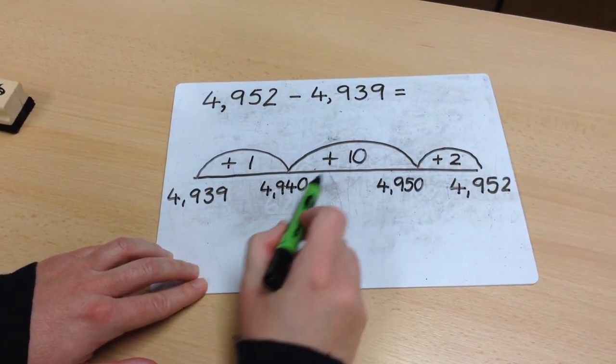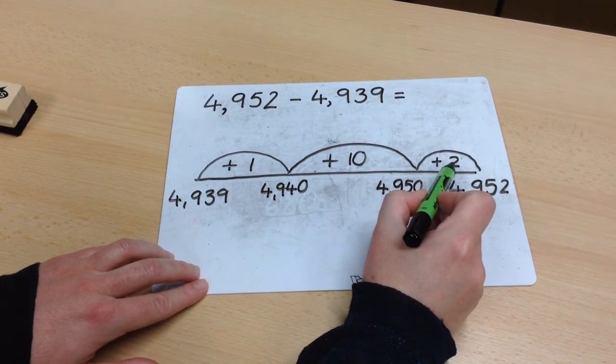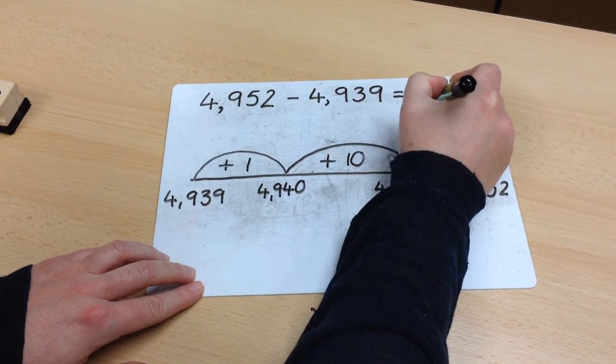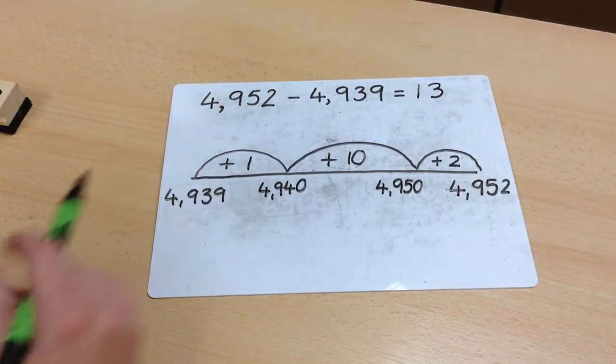My overall difference is 10. Add 2, which is 12. Add 1, which is 13. My overall difference is 13.